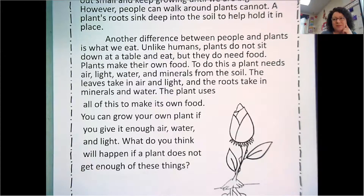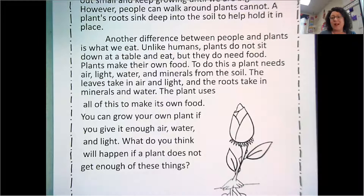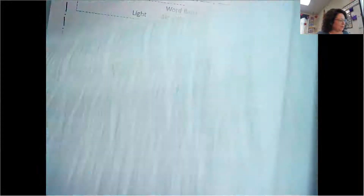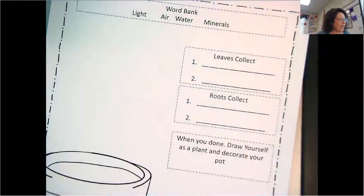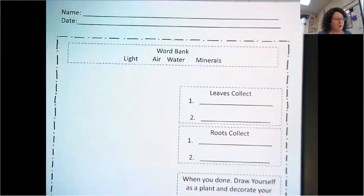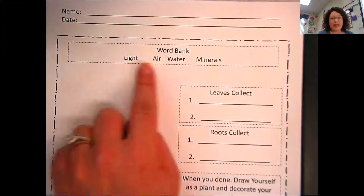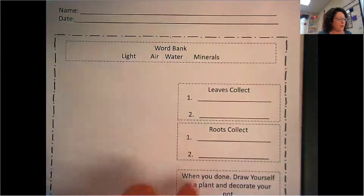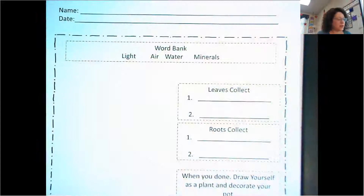What do you think would happen? Would it be able to survive? No, it would die. Just like people, we need enough of things to survive, otherwise we wouldn't survive. Okay, so let's look at our diagram. We have a word bank: light, air, water, minerals, and we have four questions.